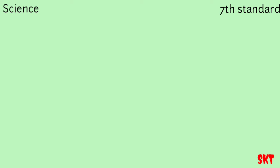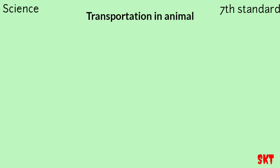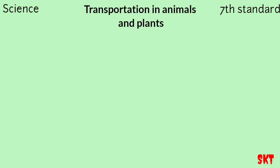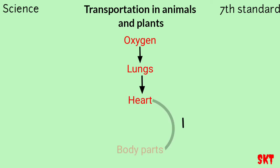The chapter's name is Transportation in Animals and Plants. The general idea is this: we take oxygen in with the help of our lungs. From the lungs, the oxygen moves into the heart. The heart pumps oxygen to all parts of our body because oxygen is the main source of energy for all parts of our body to function properly.